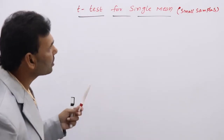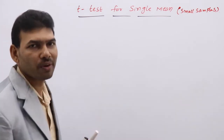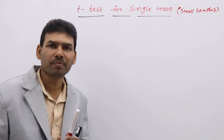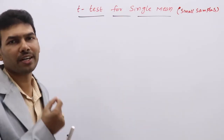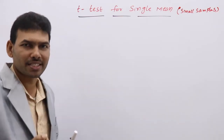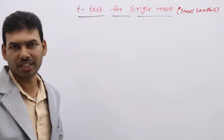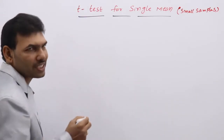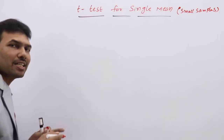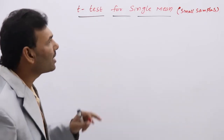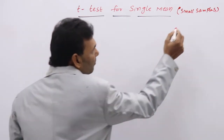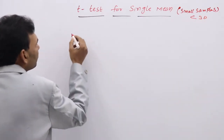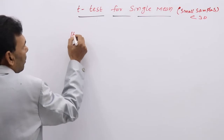Like large samples, H0, H1, and alpha are the same here. The test statistic is slightly different: in large samples we use population SD, but here we use sample SD. It looks like the Z-test for single mean, but there the size of sample is greater than 30, while here the size is less than 30. The steps involved in testing are the same for every test.